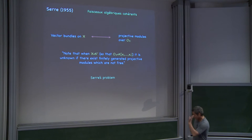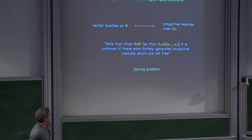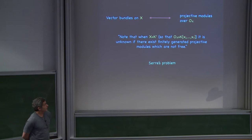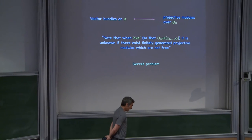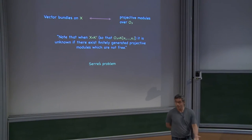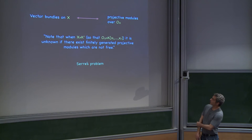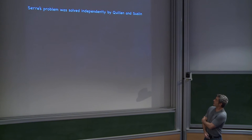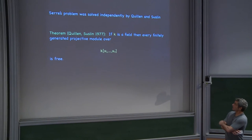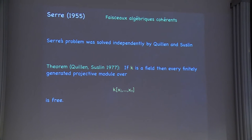In FAC, Serre writes that it's not known, when X is just affine n-space, if there's any finitely generated projective modules which are not free. And of course he's thinking by analogy with topology, where vector bundles over a contractible space are all trivial. This became known as Serre's problem, even though it was just a question, and eventually as Serre's conjecture. That problem was solved independently in the 70s by Quillen and Suslin. The theorem was exactly that if k is a field, every finitely generated projective module over k is free.